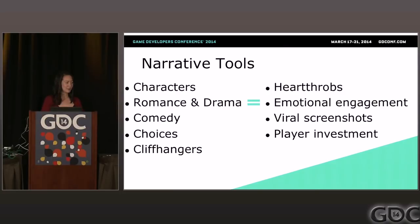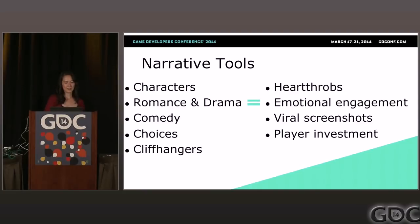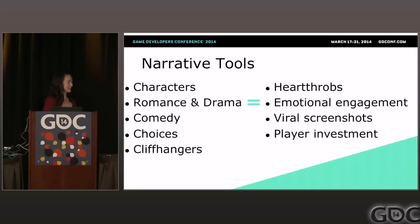Getting into the narrative tools that we use — this is an overview and we'll go through each in more detail. The ones we want to focus on today are characters, romance and drama, comedy, choices, and cliffhangers. If you do all of these correctly, as we feel we did in High School Story, then you end up with heartthrobs, emotional engagement, viral screenshots that people want to share, and player investment.